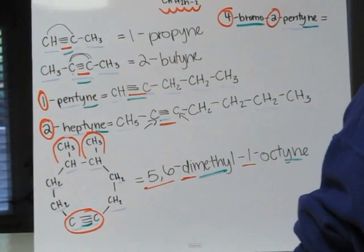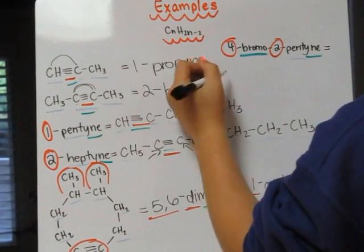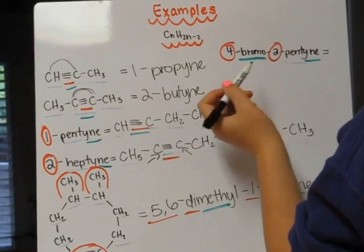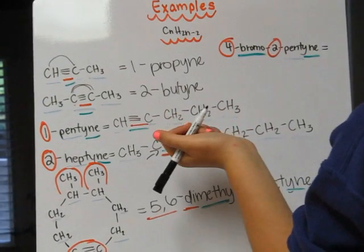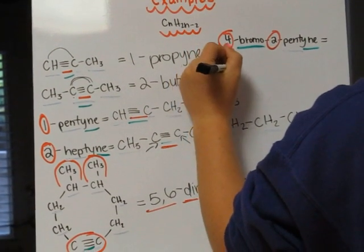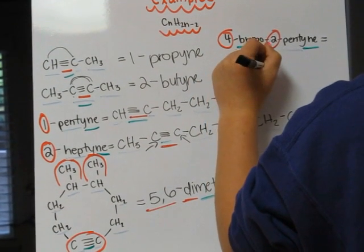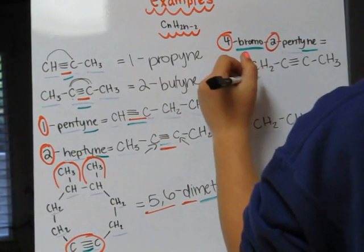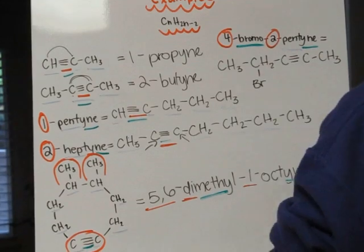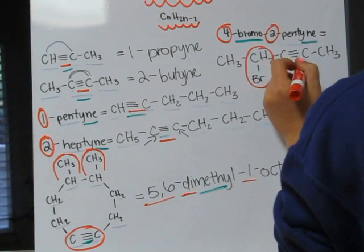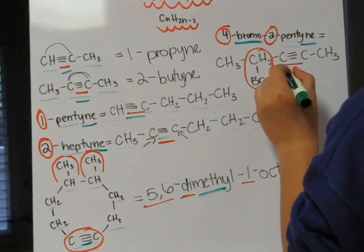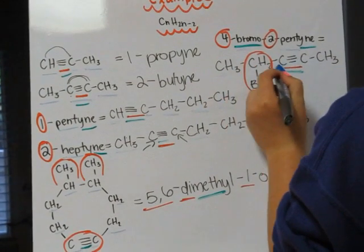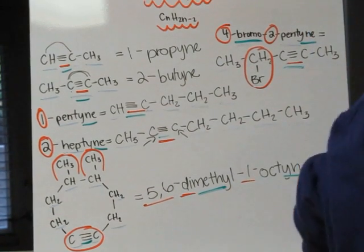Our last example, we have to draw. So we know we have pentyne, so we know there are five carbons. And we know that the triple bond goes from the second carbon to the third carbon. And we know that we have a bromo group on the fourth carbon, which is a single bromo because it has no prefix. Our bromo is on the fourth carbon. Our triple bond goes from the second carbon to the third carbon — the triple bond gives us the yne ending. And we have one bromo, and five carbons for the pent, and the triple bond for yne. And that's alkynes.